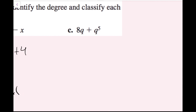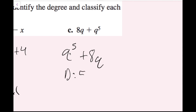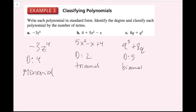For part c, I have 8q and q to the 5th. Since q to the 5th is a higher degree term than 8q, I write q to the 5th power first, then plus 8q. The degree is 5 from the leading term. With two terms, this is a binomial — I like to think of bicycles and tricycles to remember bi and tri.